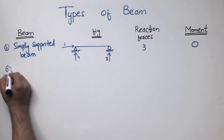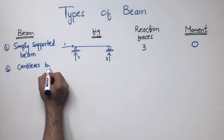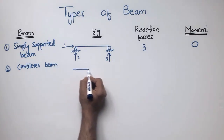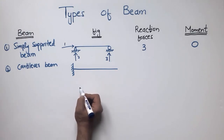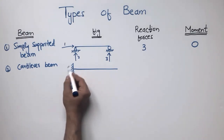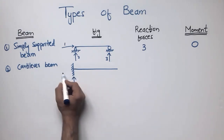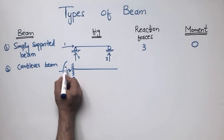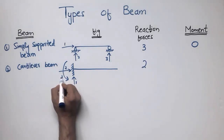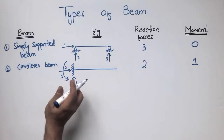The second type is the cantilever beam, also commonly used in civil engineering structures. It is fixed at one end and the other end is free. The fixed support in a cantilever beam can resist vertical force, horizontal force, and also moment. So we have two support reaction forces and one moment — it can resist moment in the case of the cantilever beam.